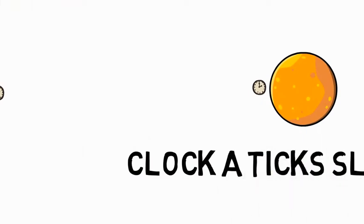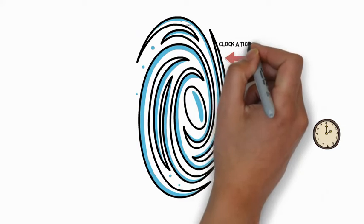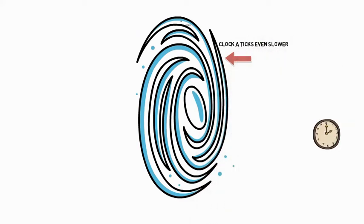So we zoom out. We take the second clock even further away from the first clock. We're so far away that we're outside of the entire galaxy. Clock A will now be observed to be ticking more slowly than before.